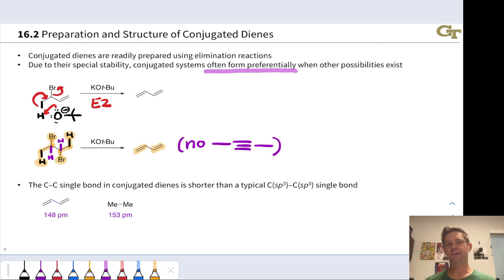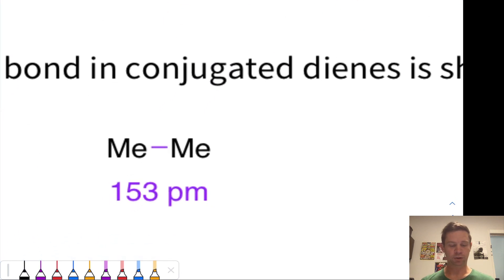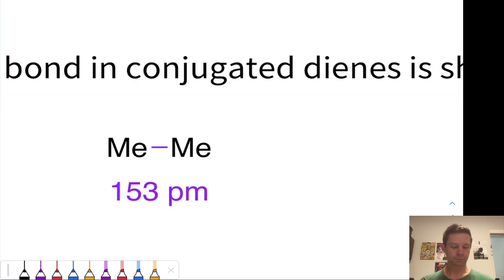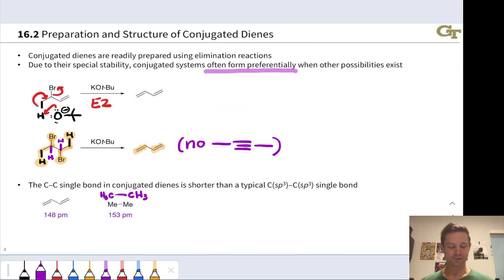Now, at the bottom here, we have an interesting observation about bond length in conjugated dienes. The C-C single bond in conjugated dienes is actually shorter than a typical SP3-SP3 carbon-carbon bond in something like ethane. So on the right, we have the molecule ethane, two methyl groups. Keep in mind here that the methyl group is CH3 or H3C. It's equivalent to a methyl group. So this molecule is CH3-CH3, just about as vanilla a sigma bond as you can imagine.